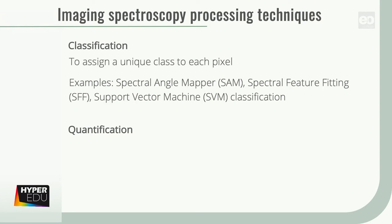Classification methods allow a direct identification of materials. Classification can be based on known reference spectra of pure materials, so-called end members. Prominent examples of classification techniques are the spectral angle mapper, the spectral feature fitting, but also machine learning techniques such as support vector machine classification.